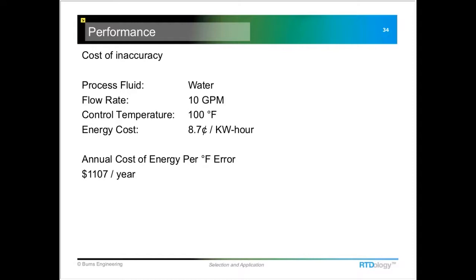An inaccurate measurement can be very costly. Our example shows $1,100 per year in losses — year after year — for a fairly mundane process: just 10 gallons per minute being heated about 40°F, like warming city water. It really pays to pay attention to how the sensor is installed, choose a good quality sensor, and get it as accurate as possible. If it costs a few hundred dollars more to do that, it's usually a good choice because it saves money in the long run.